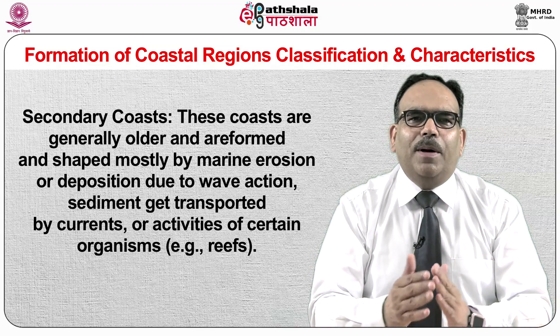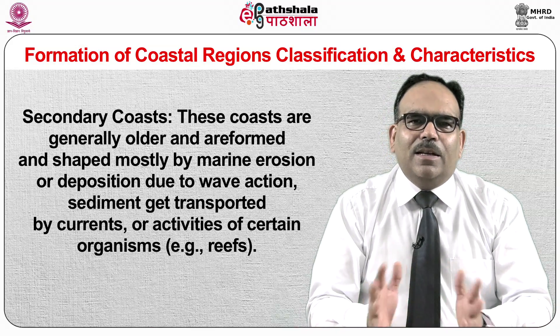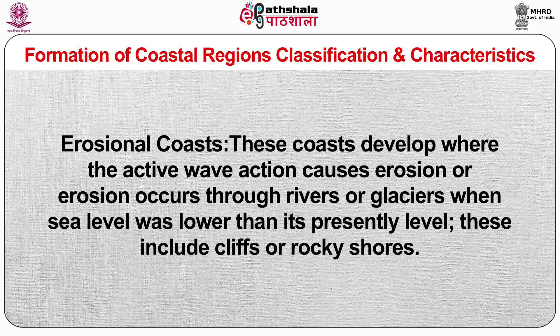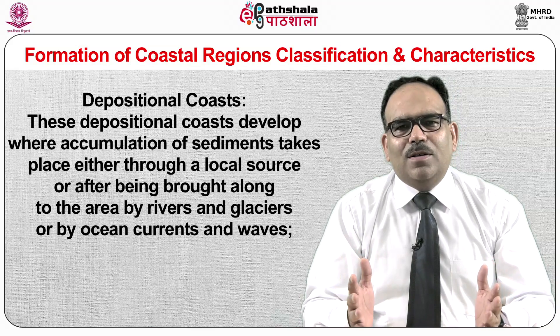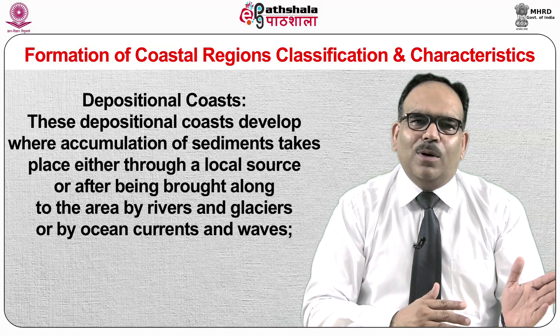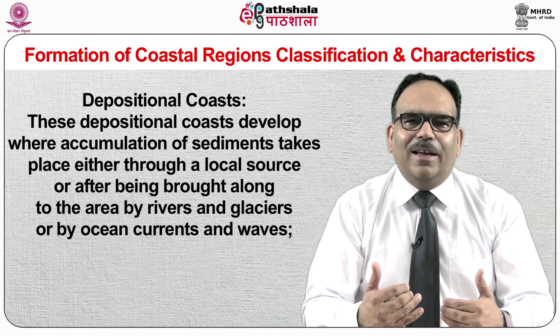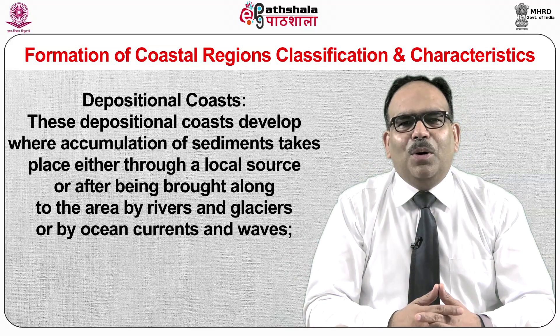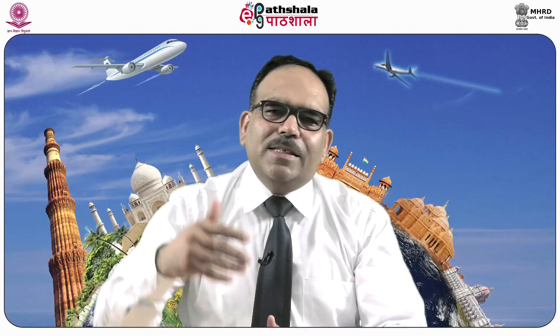Erosional coasts develop where active wave action causes erosion, or erosion occurs through rivers or glaciers when sea level was lower than its present level. These include cliffs or rocky shores. Depositional coasts develop where accumulation of sediments takes place either through a local source or after being brought by rivers, glaciers, ocean currents and waves. These include mangrove swamps, barrier islands, deltas, salt marshes and beach sand dunes.